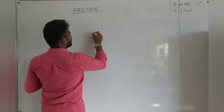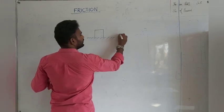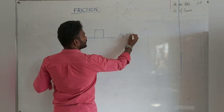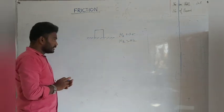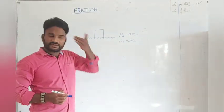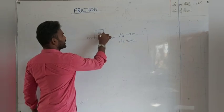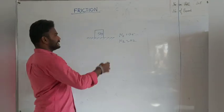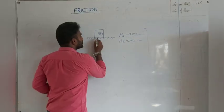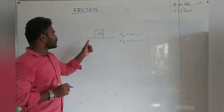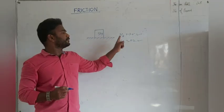Let me consider one surface with a block placed on it. This surface has μs equal to 0.5 and μk equal to 0.2. These coefficient values belong to the rough surface. The block has a mass of 5 kg. Now, suppose a force is applied on the block. The question is: what is the minimum force required to push the object? This is the very important concept of limiting force.